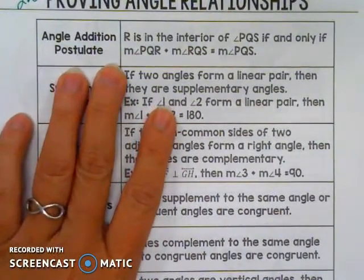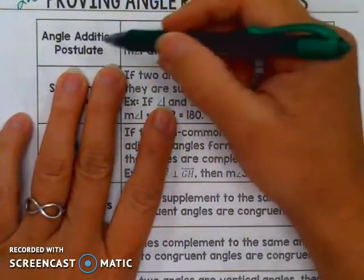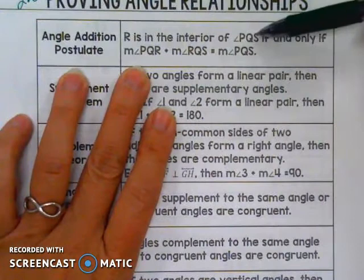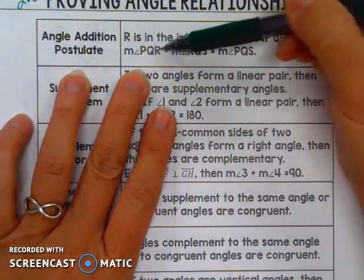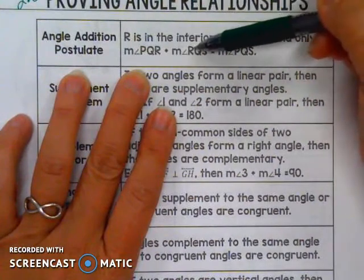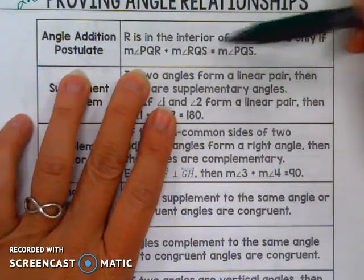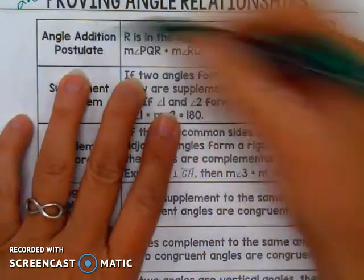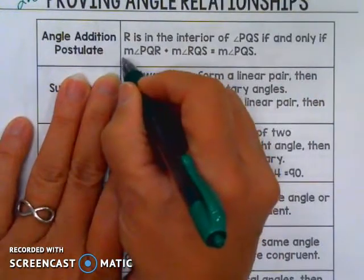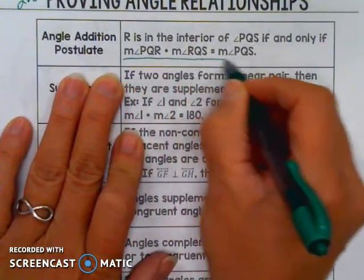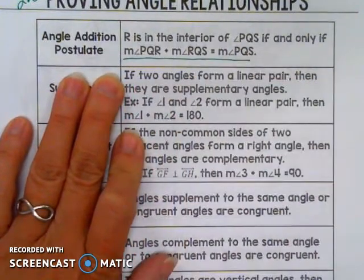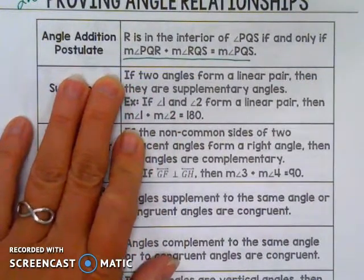Angle Addition Postulate: if R is in the interior of angle PQS, if and only if angle PQR plus angle RQS equals angle PQS. The Angle Addition Postulate is basically what this says, but R has to be in the interior for that to be true.